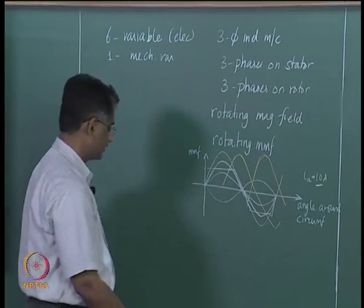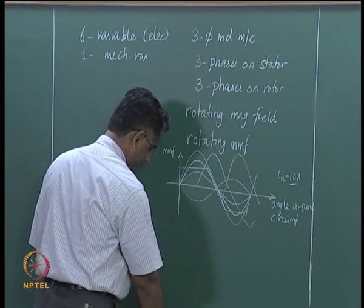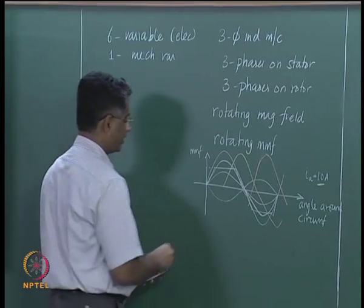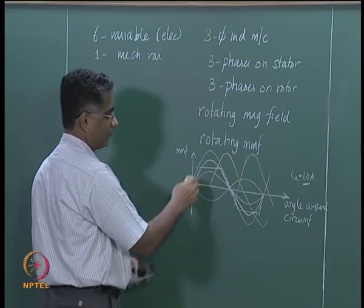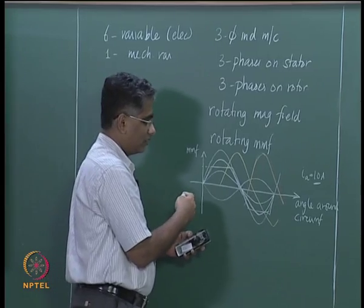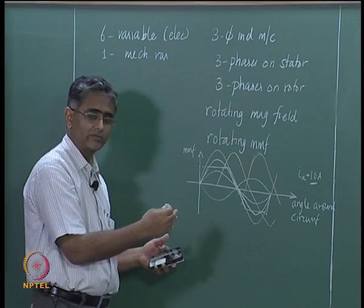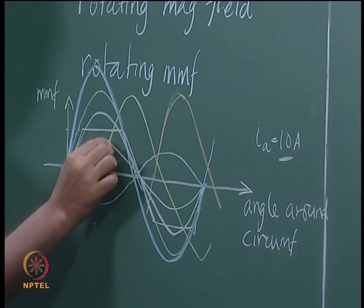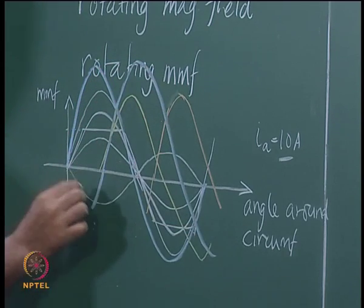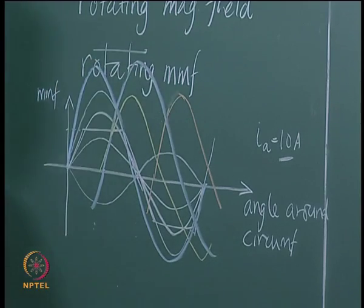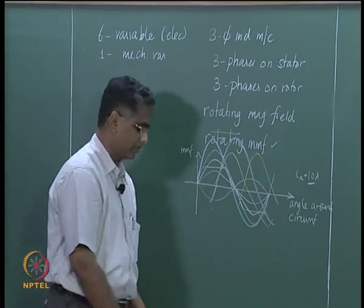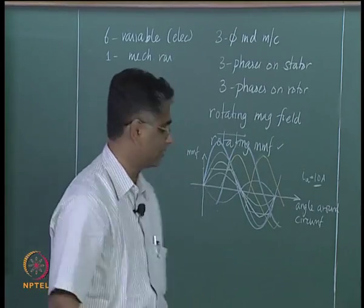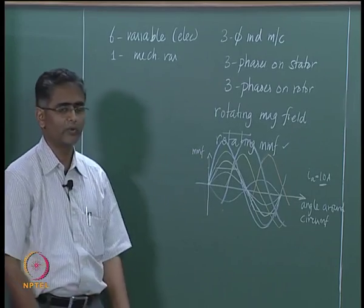The net result of all these is a sinusoidal waveform that moves with respect to time. If you add up all contributions at every given angle for three-phase sinusoidal excitations — 120 degrees displaced with respect to time — you get a sinusoidally varying MMF waveform that moves with respect to time and has a constant amplitude. In a circumferential air gap, this is nothing but a rotating MMF.